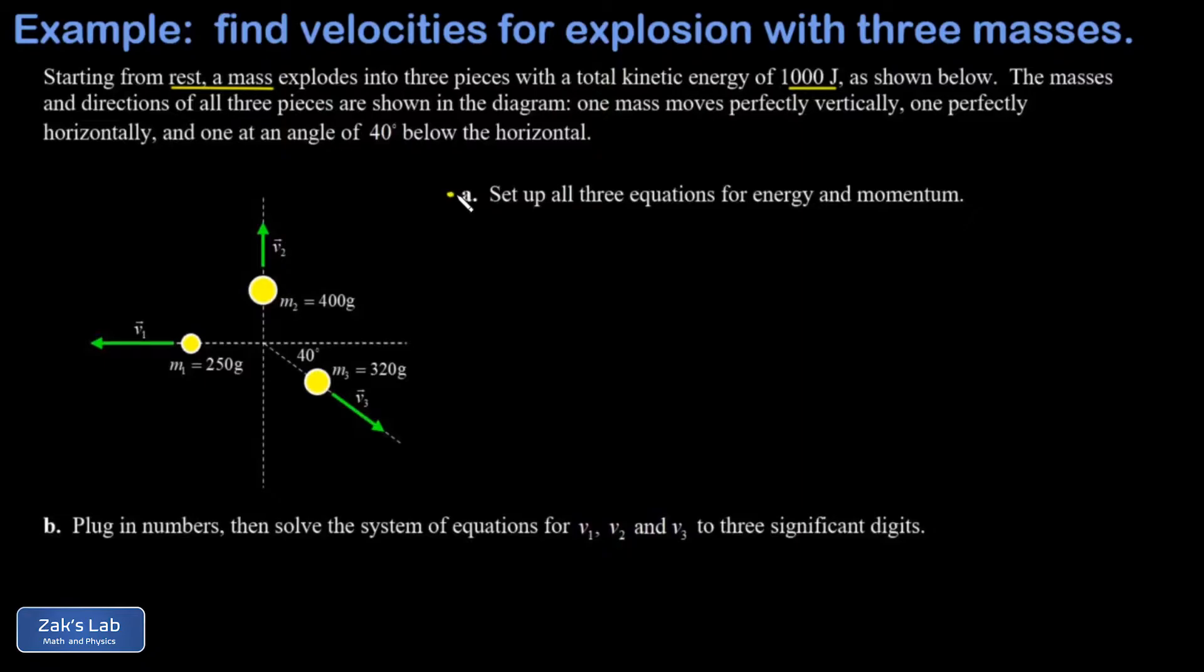In part A, we're asked to set up all three equations for energy and momentum. We know if we add together the energies of all of these pieces, we get 1,000 joules. The momentum equations - well, my initial momentum with a mass at rest was 0. So my momentum equations come from looking at the total x momentum and the total y momentum of the fragments, and the sum of each of those components should be 0.